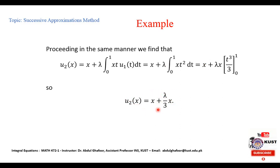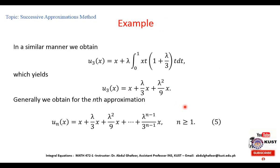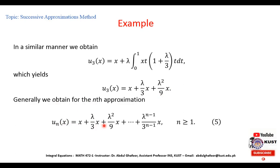To find the third approximation, we replace x with t in u2, giving u2(t) = t + (λ/3)t. Then u3(x) = x + λ∫[0 to 1] xt · (1 + λ/3)t dt, which evaluates to u3(x) = x + (λ/3)x + (λ²/9)x. Generally, the nth approximation is un(x) = x + (λ/3)x + (λ²/9)x + ... + (λ^(n-1) / 3^(n-1))x, for n ≥ 1.